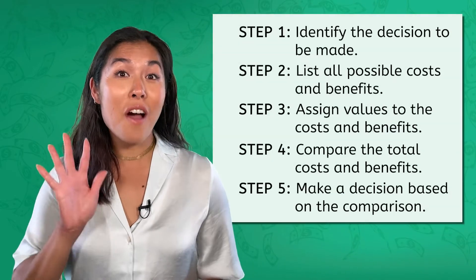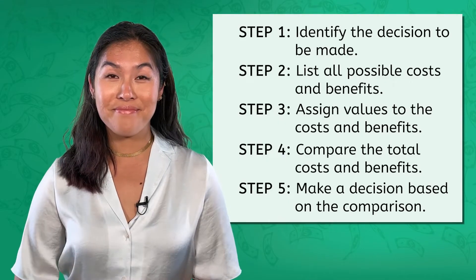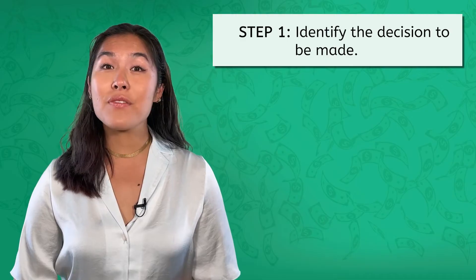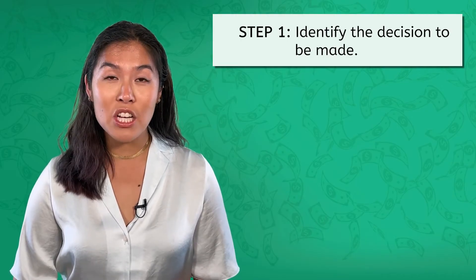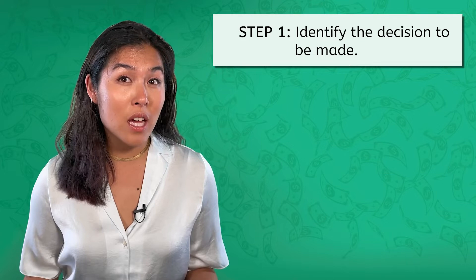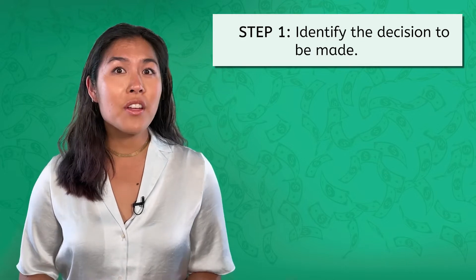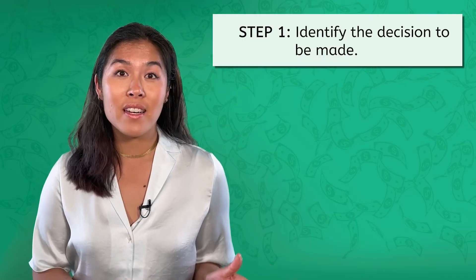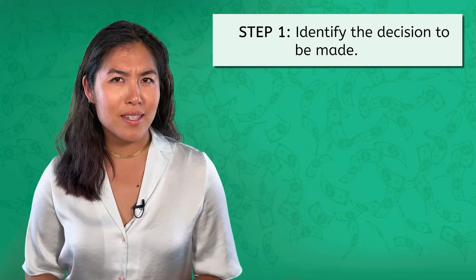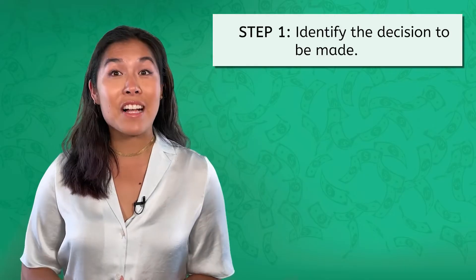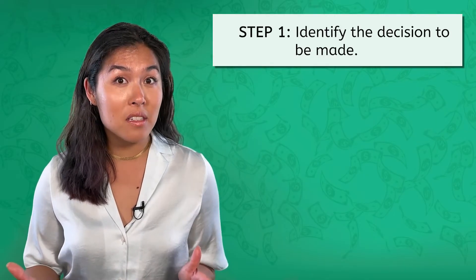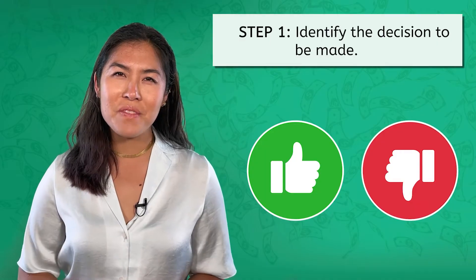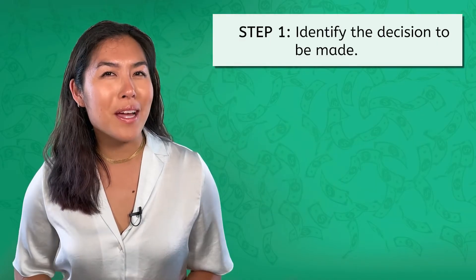Economists break it down into five basic steps. Step one: identify the decision to be made. So I've been thinking about maybe getting a part-time job during the school year, to save some cash for college or whatever comes up later on. What do you think a cost-benefit analysis would say about that? Good idea or not so much? Let's keep going and find out.